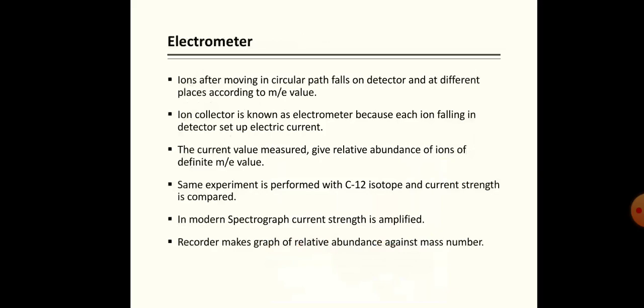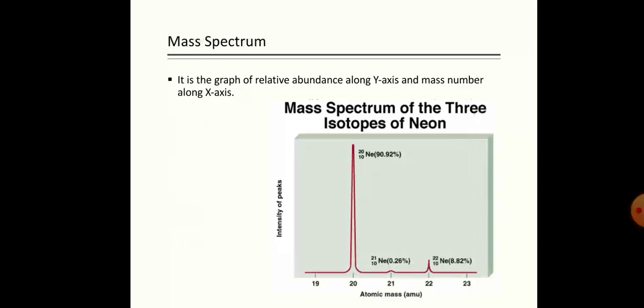The same experiment is performed with carbon-12 and the current strength of our desired element is compared with carbon-12. The result is recorded in the form of a graph. In modern spectrographs, before recording the result, we amplify this current strength so that we can determine the exact number of isotopes of any element. After amplification, the result is again recorded as a graph.